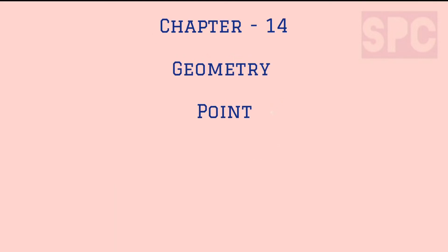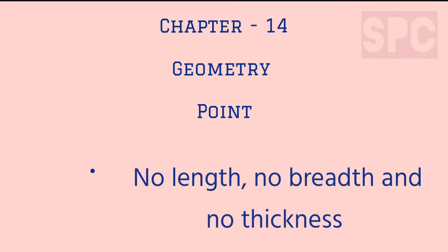Let's start with point. What is a point? A point is an exact location. When you make a fine dot with a sharp pencil, that dot represents a point. This point has no length, no breadth, and no thickness. A point can be named — for example, point A.